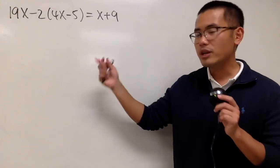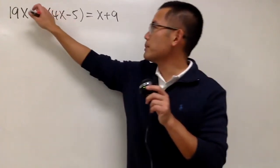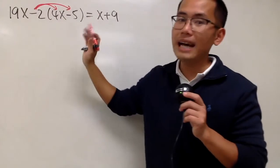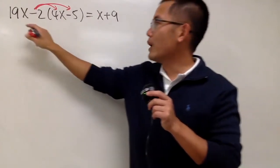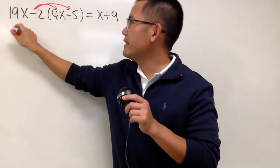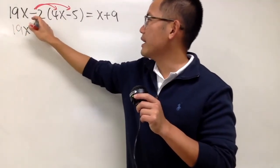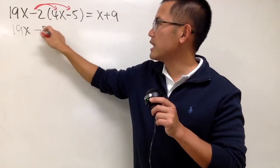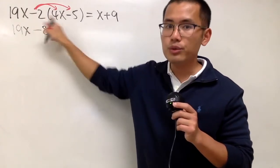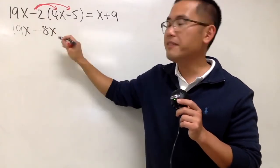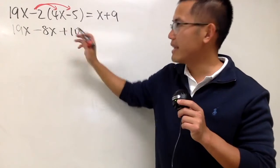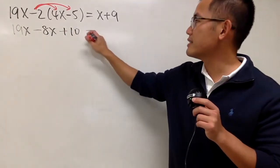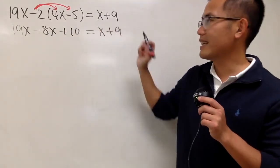To solve this equation, we will first multiply the negative 2 into the parentheses — distribute that — and we will have 19x. Negative 2 times 4x is negative 8x, and negative 2 times negative 5 is plus 10. The right-hand side stays the same: x plus 9.